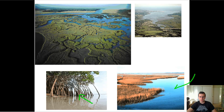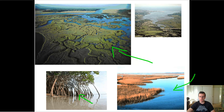Those other kinds of estuaries are called salt marshes. They're basically more grassland-like, and they're more common in temperate areas where there's less nutrients and less sunlight and lower temperatures as well.